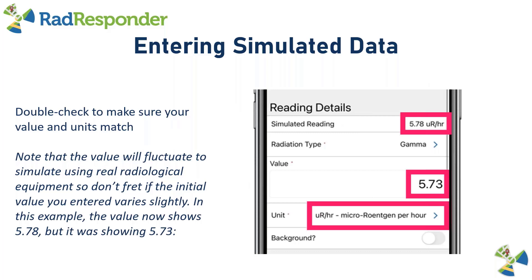Double check that your value and units match. However, note that your value will fluctuate — the simulated reading is going to vary a little bit to simulate using actual radiological detection equipment. So if the initial value varies slightly from what you're seeing after you enter all your information, don't worry. In this example, I'm now seeing 5.78 when previously I was seeing 5.73. Just pick the number you're seeing and type it in, and know that your simulated reading is going to vary slightly.